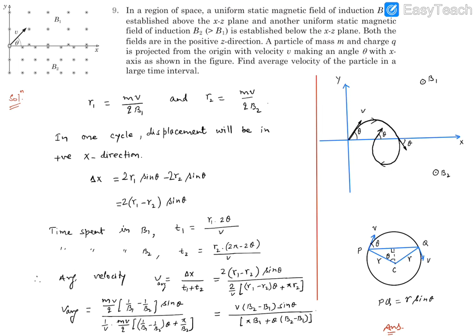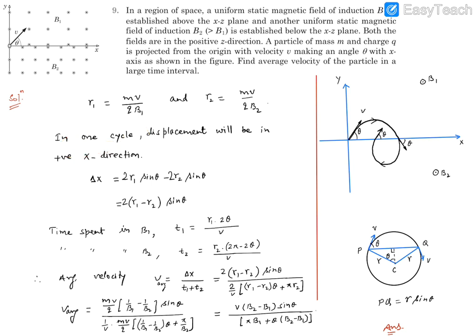To find the average velocity, we need the displacement divided by time. The particle undergoes periodic motion — it moves through part of a circle above the xz plane, then part of a circle below, then repeats. If we consider one cycle and find the displacement and time for that cycle, the next cycles will be identical, allowing us to extend to a large time interval.